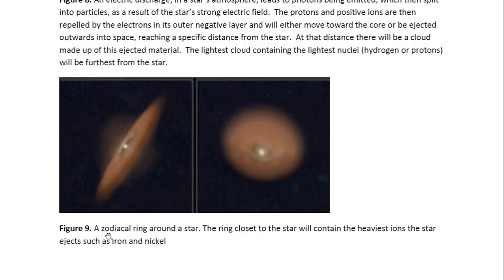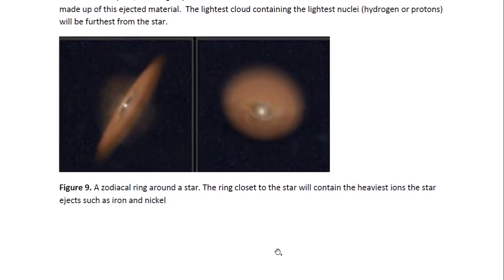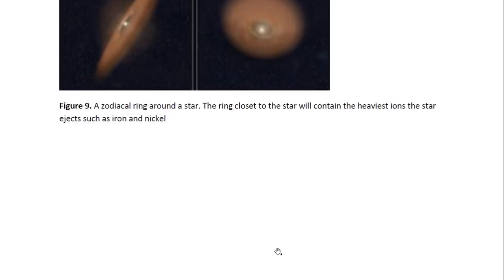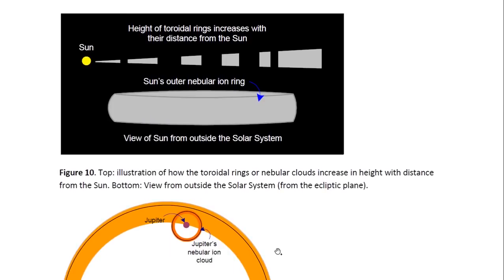And the closest nebula cloud is called a zodiacal ring, which usually occurs around the star, which we see here. And the sun has one of these as well. It has many rings and many clouds, as most stars do. And the clouds get taller as we move away. So this would be the view of the solar system from outside the solar system, but from the ecliptic plane. We would see the sun's outer nebula cloud, the sun would be inside there somewhere. And there would be smaller nebula clouds as we move in towards the sun.